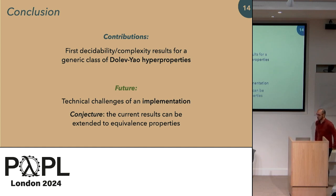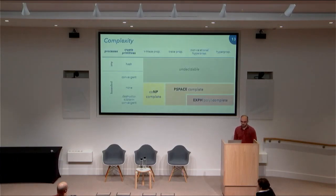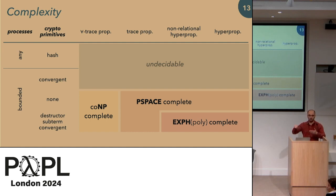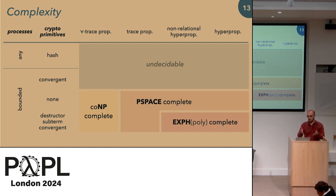Question: On the complexity overview slide, what are non-relational hyperproperties? Answer: It's the equivalent of CTL* in this setting. You have trace properties saying 'for all traces something holds', and fully relational hyperproperties with arbitrary quantifiers expressing relations between multiple traces. A non-relational hyperproperty would be something like 'for all traces, if some trigger happens, then there exists a continuation of the trace so that something happens' — you have several quantifiers, but they are nested and not put in relation. It's essentially a branching-time property.